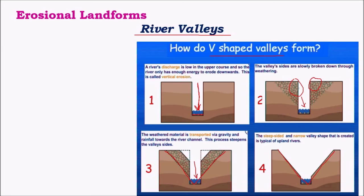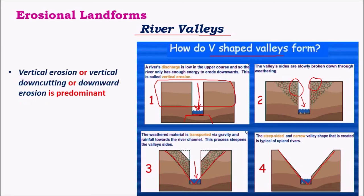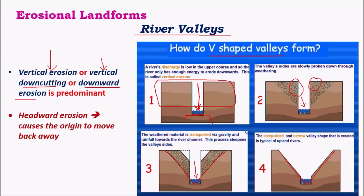V-shaped valleys are mainly found in mountainous regions where the river flows swiftly, eroding the upper softer rock strata. At a certain point, the river reaches a hard strata where vertical erosion becomes less significant, making further erosion scarce. In V-shaped valley formation, vertical erosion — also called vertical down-cutting or downward erosion — is predominant.